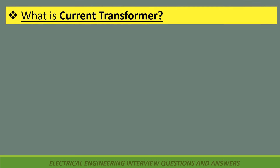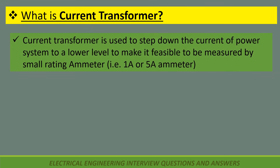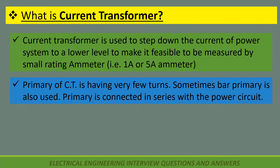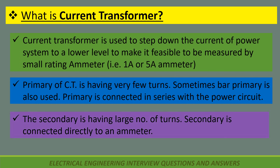What is current transformer? A current transformer is used to step down the current of a power system to a lower level to make it feasible to be measured by a small rating ammeter — that is, a 1 ampere or 5 ampere ammeter. The primary of CT has very few turns; sometimes a bar primary is used. Primary is connected in series with the power circuit. The secondary has a large number of turns and is connected directly to an ammeter.